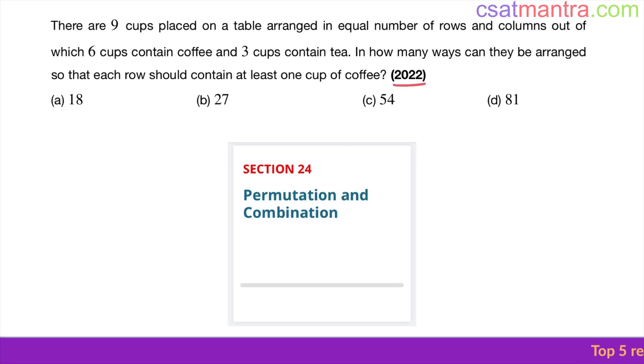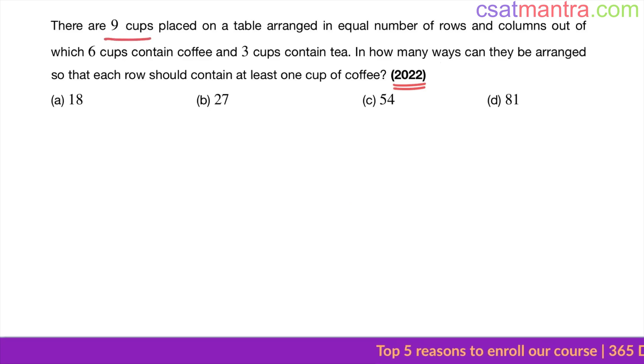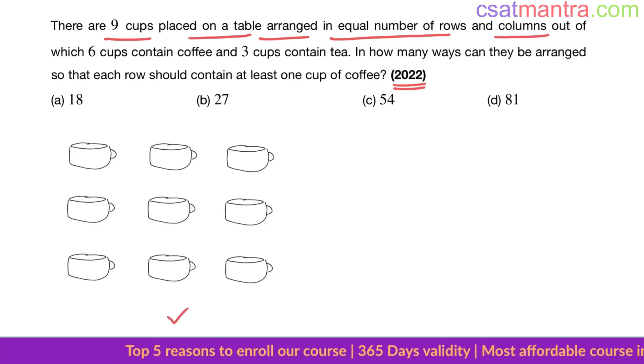This question is asked in 2022 based on permutation and combination. Easy question. There are nine cups placed on a table arranged in equal number of rows and columns. This is how you can arrange nine cups in equal number of rows and columns - three by three.